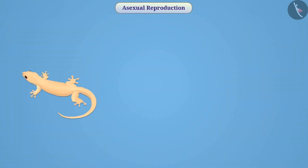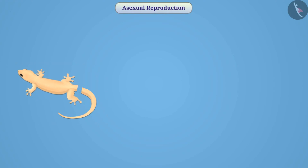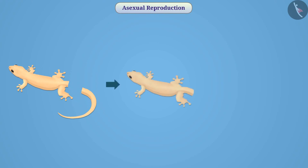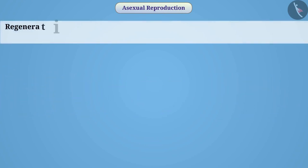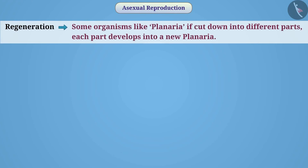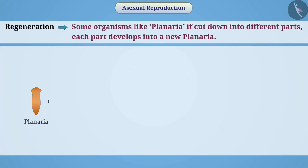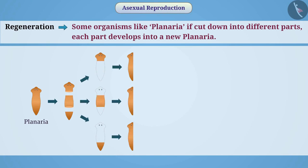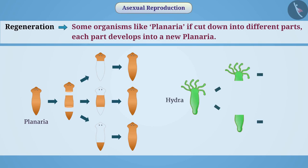You must have seen that lizards separate their tail from the body under adverse circumstances. Later, the lizard regenerates its tail again. Similarly, in the method of regeneration, if some organisms like planaria are cut into different parts, each part develops into a new planaria. This method of reproduction can also be seen in hydra.